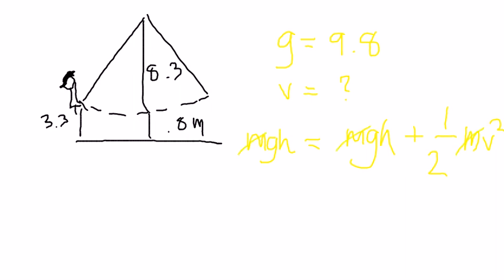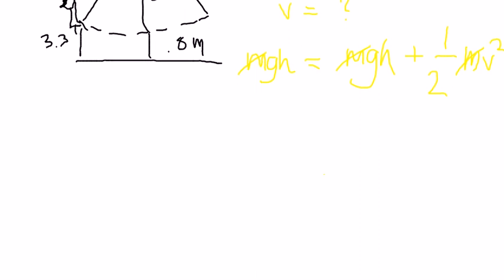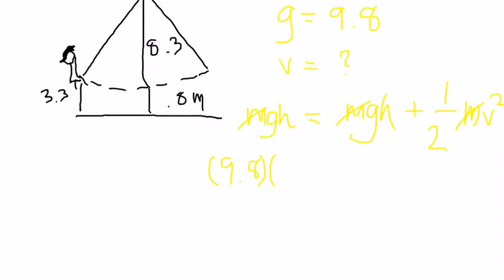All of them there. So gravity times height is... gravity times 9.8 times 3.3 and gravity times the other height, which is 0.8.